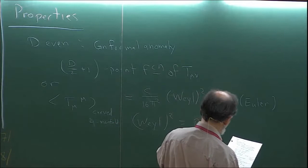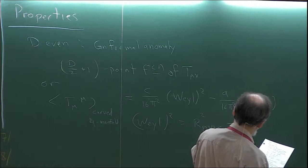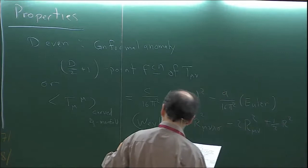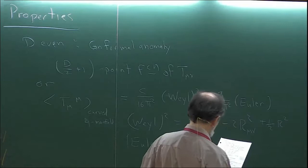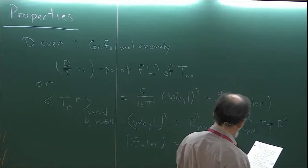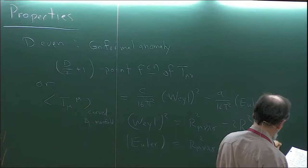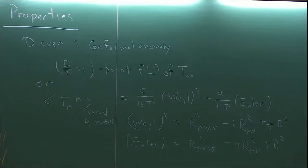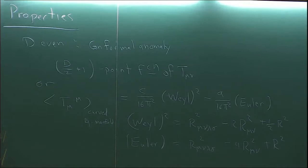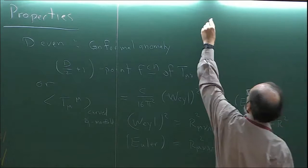In four dimensions there are two possible terms, each quadratic in the curvature. The Weyl squared term can be written in terms of Riemann tensor squared minus twice Ricci tensor squared plus one-third Ricci scalar squared. The Euler or Gauss-Bonnet density is Riemann squared minus four times Ricci tensor squared plus R squared. The coefficients A and C are invariants of the conformal field theory — they are its most basic properties. In two dimensions there's only one, called the central charge C; in four dimensions there are two, A and C.